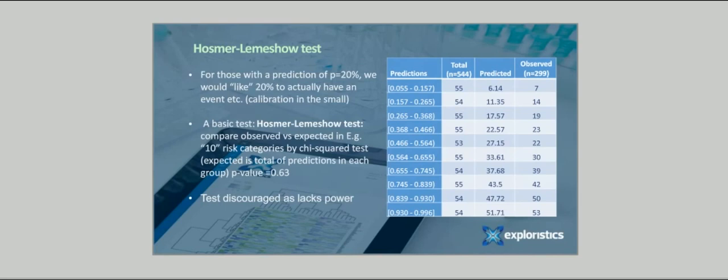We now discuss a calibration test called the Hoseman-Lemershow test. Now, for the risk subset of those with a prediction of 20%, we would like 20% to actually have an event, etc. And this is called calibration in the small, meaning each risk subset has the correct event rate. This can be assessed with a basic test called the Hoseman-Lemershow test, that sorts our patients by risk estimate, and then divide them into groups, e.g. the 10th with the highest risk predictions, the next 10th with the next highest risk predictions, down to the 10th with the lowest risks. In each group, we compare the actual number with the event in that group, with the predicted number based on totalling the risks in each subset, i.e., if there's, say, 100 patients in the highest risk 10th, all have estimates of 90%, we'd expect 90 to have the event. The total differences are compared by a chi-squared test. This test is, however, often discouraged, as it lacks power to spot true miscalibration.